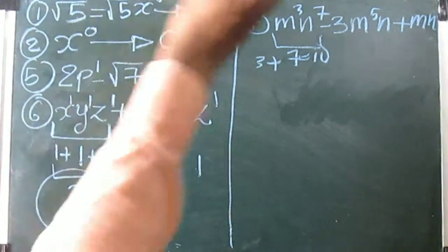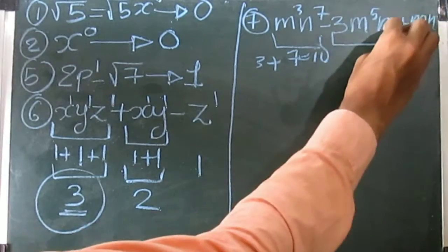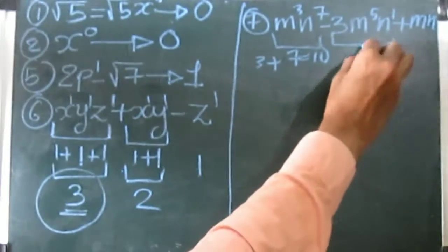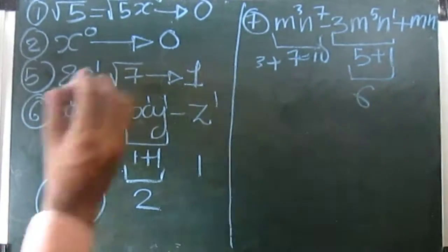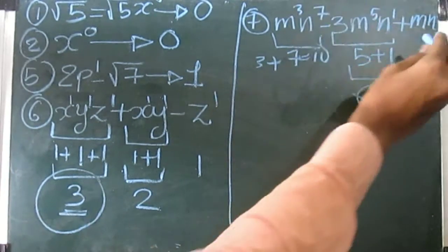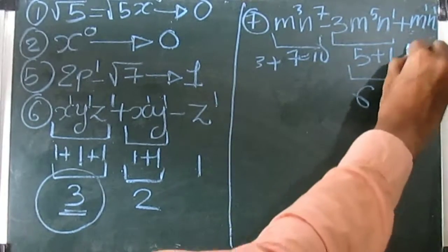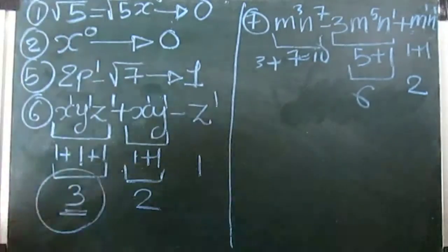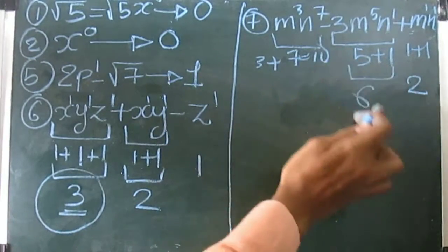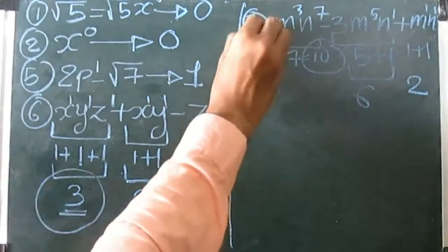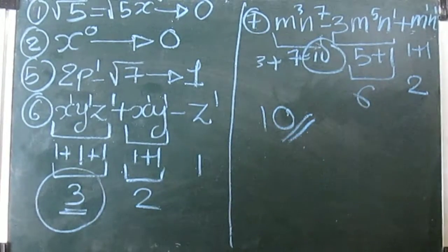The power of the second term: n to the power five times n to the power one — nothing written means one — so it is five plus one, which is six. The last term is m times n: the power of m is one and the power of n is one, so the power of this term is two. The highest among ten, six, and two is ten, so the degree of this polynomial is ten. Try to do the terms we have skipped.